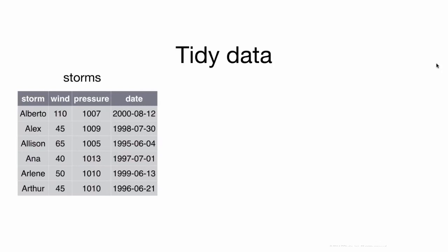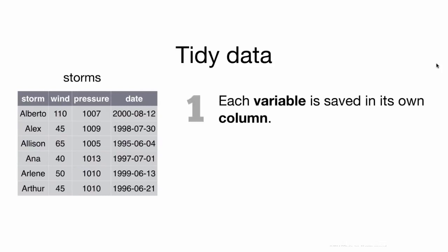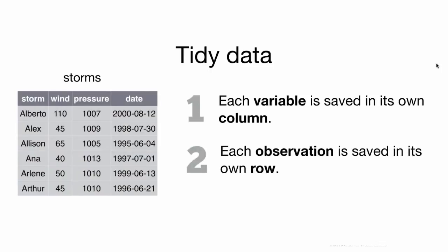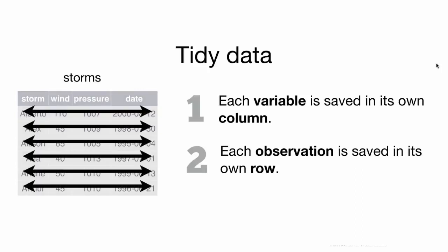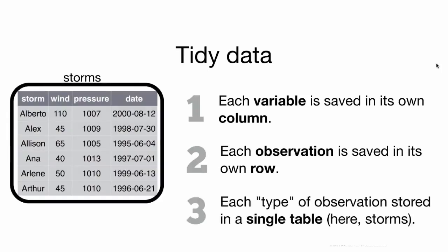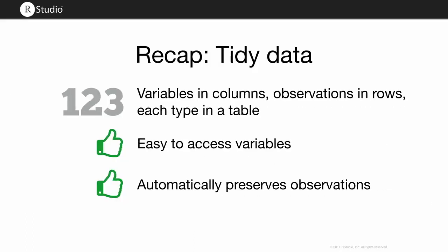I'm going to call that data structure tidy data — a term popularized by Hadley, the author of tidyR and dplyr. Tidy data means each variable is saved in its own column, each observation is saved in its own row, and all the data you plan to work with is in the same data table before you start. If you make your data tidy — variables in columns, observations in rows, each type of data in its own table — it'll be easy to access variables and you'll automatically preserve observations as you work.